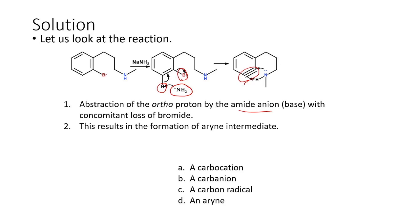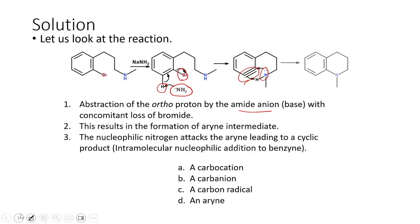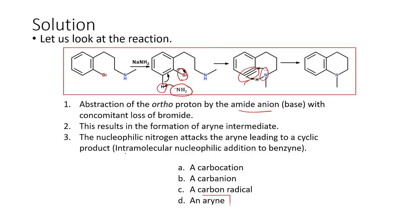When the benzyne is formed, benzyne is basically electron rich and we have a lone pair on the nitrogen. The lone pair on the nitrogen attacks the benzyne with concomitant abstraction of the hydrogen atom by one of the pi bonds. This leads to cyclization — intramolecular nucleophilic addition of the benzyne takes place. So the intermediate involved in this reaction is the arine intermediate.